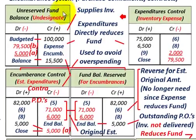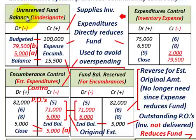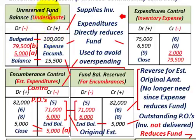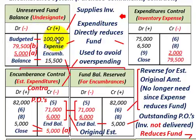When we're talking about the encumbrance system, we're going to have to set up three accounts that we deal with, along with our payables and our expenses. The first account is the unreserved fund balance, undesignated fund balance. This is for the budgeted amount for those supplies inventories we're going to purchase for the year. You can think of this unreserved fund balance like retained earnings or the equity side of the equation in profit or corporate accounting. We're going to credit it for the budgeted amount of $100,000 for those supplies.